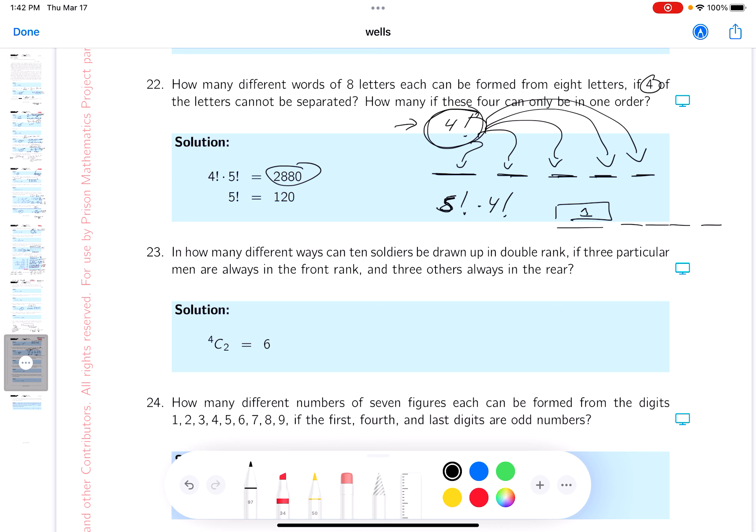Again, this could be put here, there, there, there, or there, all right? Just like another letter. That's all it is. So five factorial. That would be 120.